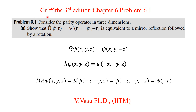Today we will solve problem 6.1 from Chapter 6 of Griffiths 3rd edition, Introduction to Quantum Mechanics. This problem consists of three subdivisions. First we will see subdivision A: consider the parity operator in three dimensions, denoted Pi-hat, which is the parity operator.